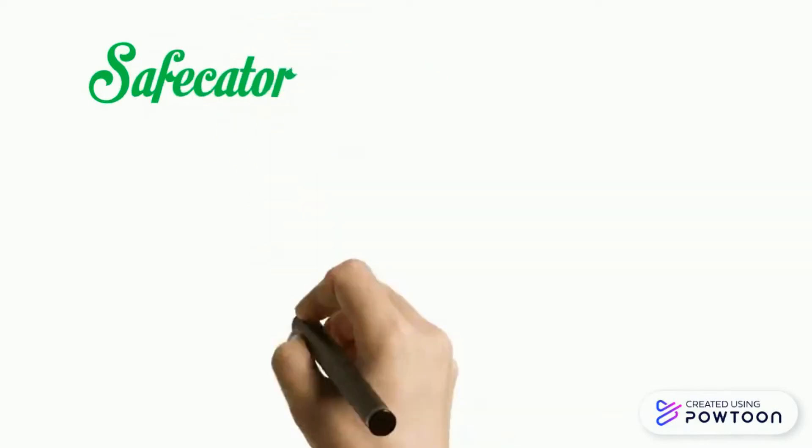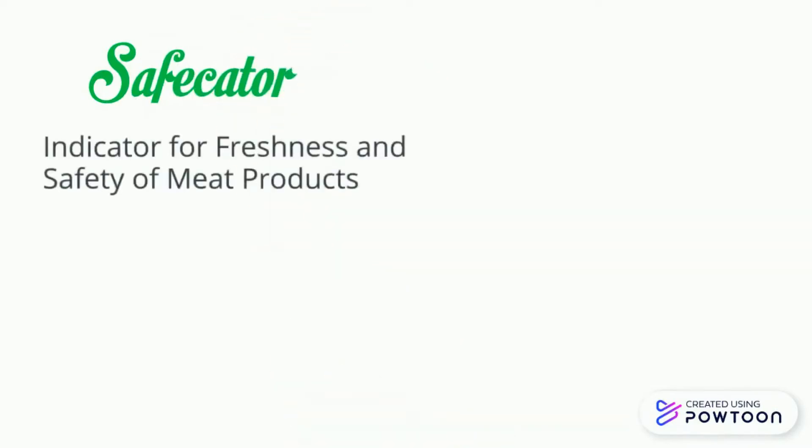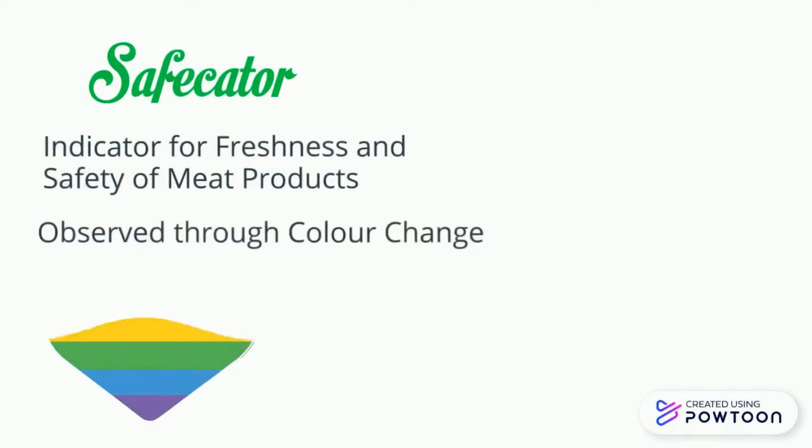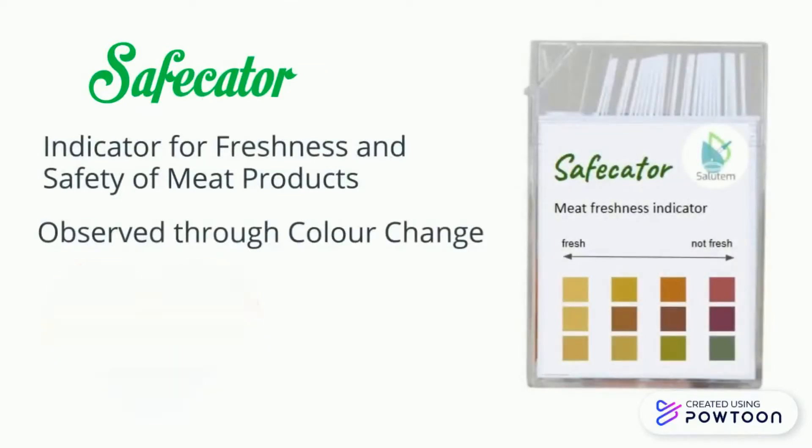We offer to you a product called Safe Gator. This product is an indicator to ensure the freshness and safety of the meat by observing color change. The indicator paper is made in the strips form. The strips are put inside while the color chart is placed on the packaging.